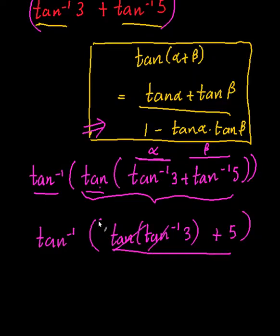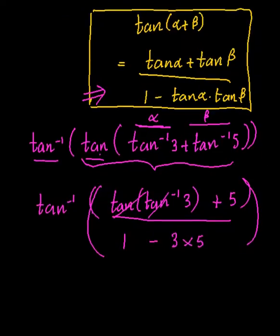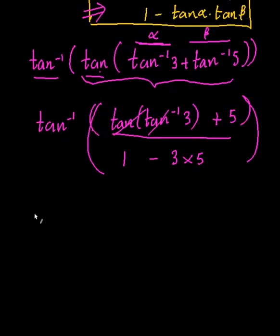All on, oops, I should have, let me get the brackets bigger. All on 1 minus 3 times 5, so I end up with, this is equal to tan inverse of 8 on 1 minus 15, so that's, what is it, that's minus 14.